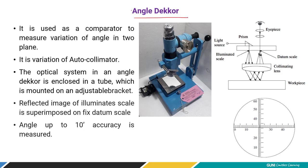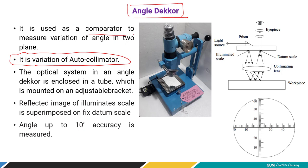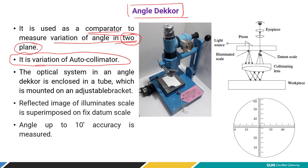The angle decker is another angular measuring device and is simply a variation of the autocollimator. Its first function is that it is used as a comparator to measure the variation of angle in two planes — this is important. By construction, the function is the same as the autocollimator, but there is a small change: it has two scales — one is a datum scale and the second is an illuminated scale.